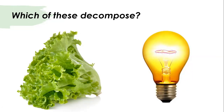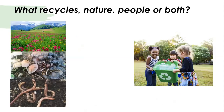So listen: the light bulb decomposes slowly, and the lettuce decomposes quickly, because it is biodegradable waste. The other question is: what recycles — nature, people, or both?